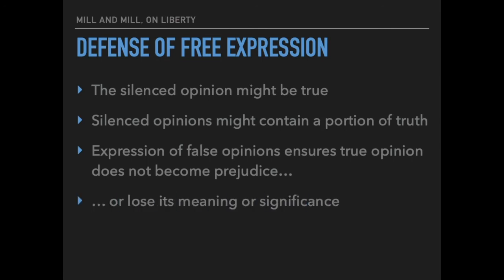Mill also thinks, and this is somewhat more complicated and worth further discussion, that if we don't have to compare the true opinion to alternatives, we might lose the very meaning — it might lose its meaning or significance for us entirely. We wouldn't really even understand what we believe; we would just sort of believe it by rote. Mill is also keen to point out that we are not infallible — our beliefs are never completely certain. So we don't know whether the opinion in question is true, false, or partly true. But insofar as that exhausts the possibilities, he has a defense of expressing opinions in all these possible cases, even though we don't really know which case we're in.